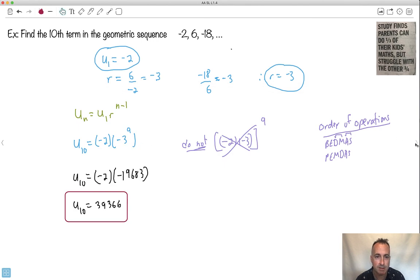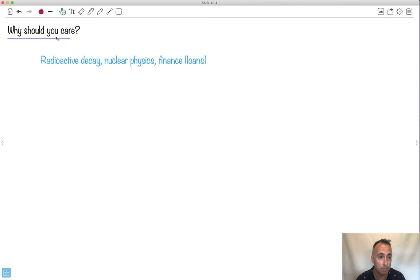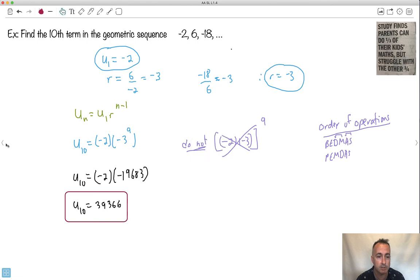Now, why is this stuff right here actually useful? We use geometric sequences all over the place - in nuclear physics and finance for loans when we do this thing called compound interest, radioactive decay. This stuff actually does show up. So although it seems really annoying with just dumb numbers, it's actually used for stuff later on.